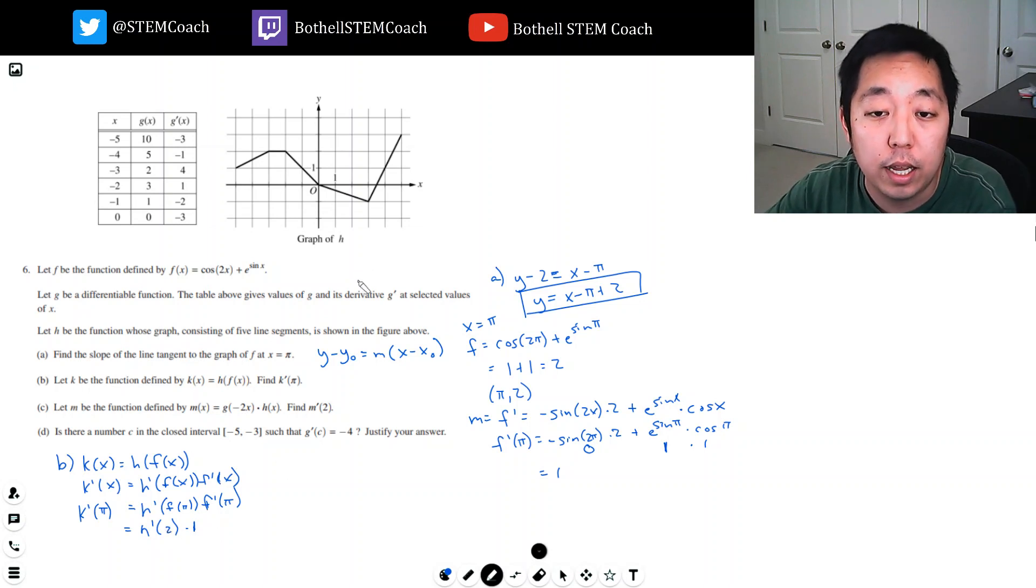So h prime of 2. This is h, I go to 2, and h prime would be the slope here. The slope here is I go down 1 and over 3, so it would be negative 1 third.